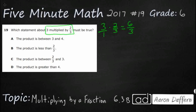And if we divide, 3 goes into 6 twice. So 6 thirds equals 2.